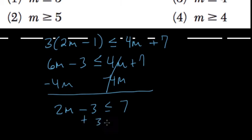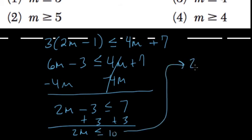Get my numbers to the right and add 3, so you get 2m less than or equal to 10. Almost done. If 2m is less than or equal to 10, divide everything by 2 and m itself is less than or equal to 5.